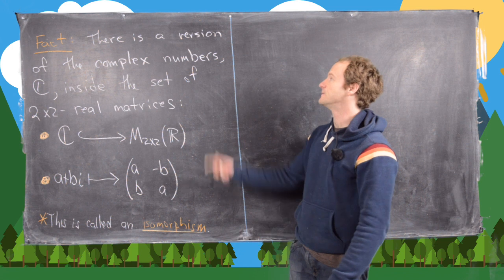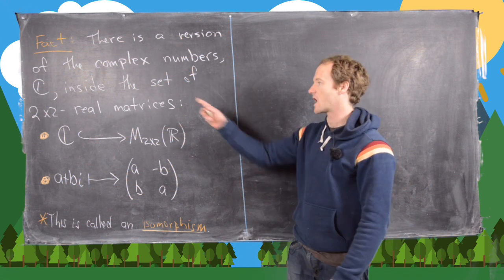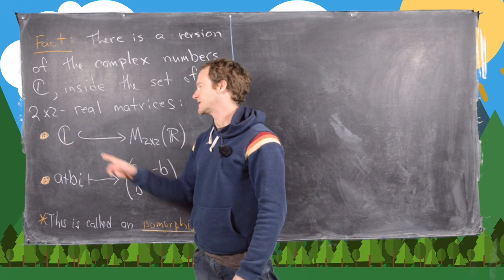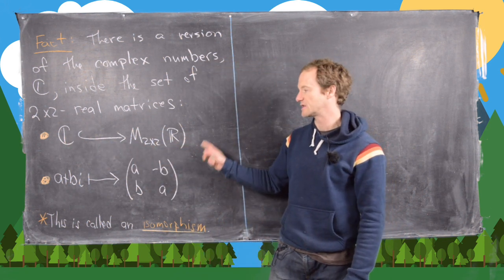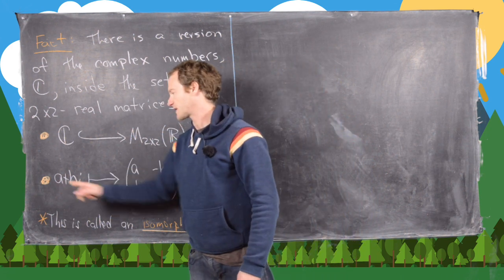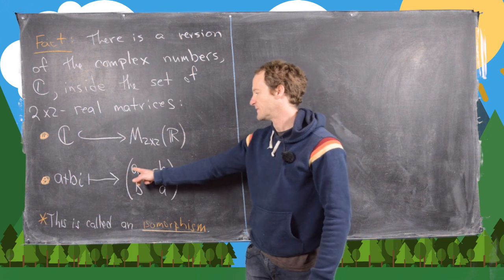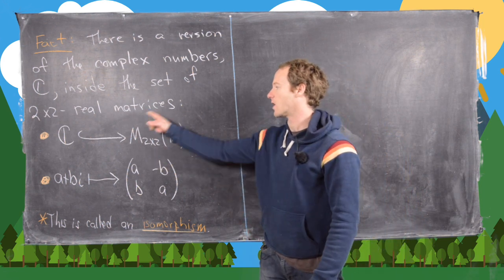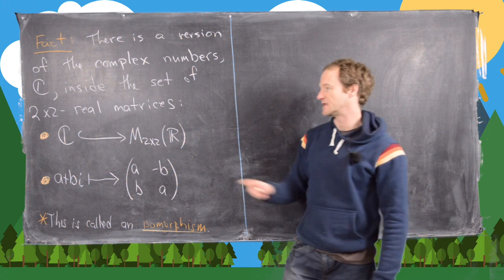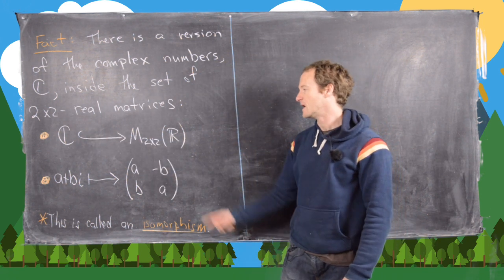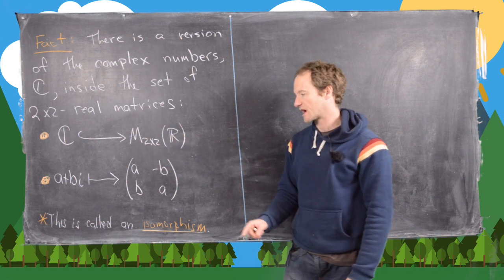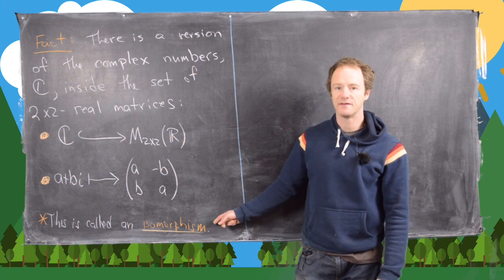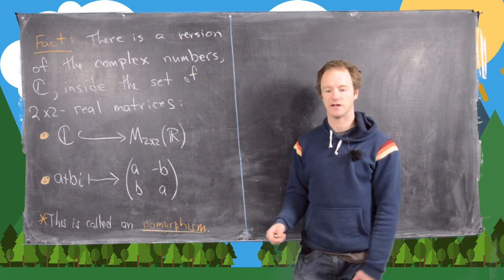There is a version of the complex numbers inside the set of real 2x2 matrices. We can put the complex numbers into real 2x2 matrices by this map: the complex number a + bi goes to the 2x2 matrix with a's on the diagonal, -b in the upper right, and b in the lower left. We don't hit all real 2x2 matrices — only some of them. The image is actually an isomorphic copy of the complex numbers, so this map is an isomorphism of fields.